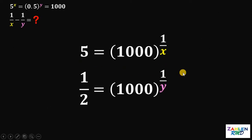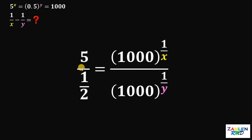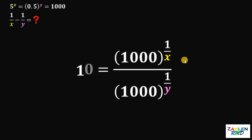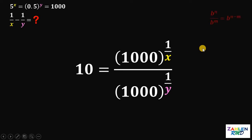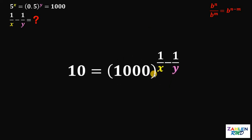From here, let's focus on these two results. Our goal is to find the value of 1 over x minus 1 over y. To achieve that, we divide these two equations: 5 divided by 1 half equals 1000 raised to 1 over x, divided by 1000 raised to 1 over y. Now 5 divided by 1 half gives us 10. We will use the law of exponents: if we have b raised to n over b raised to m with the same base, it is equivalent to b raised to n minus m.